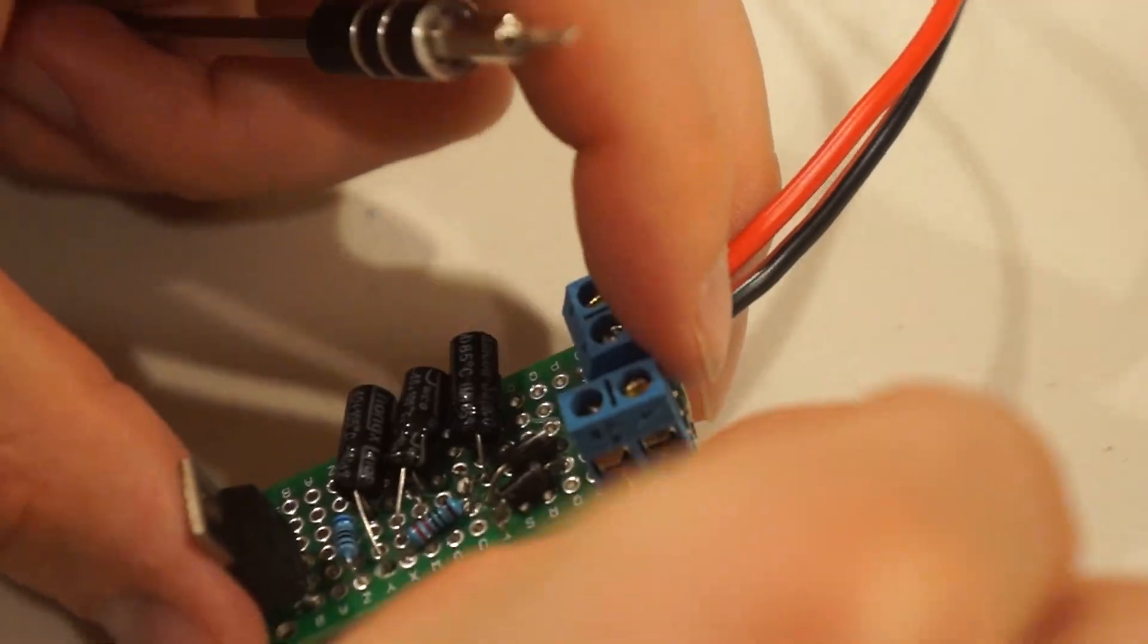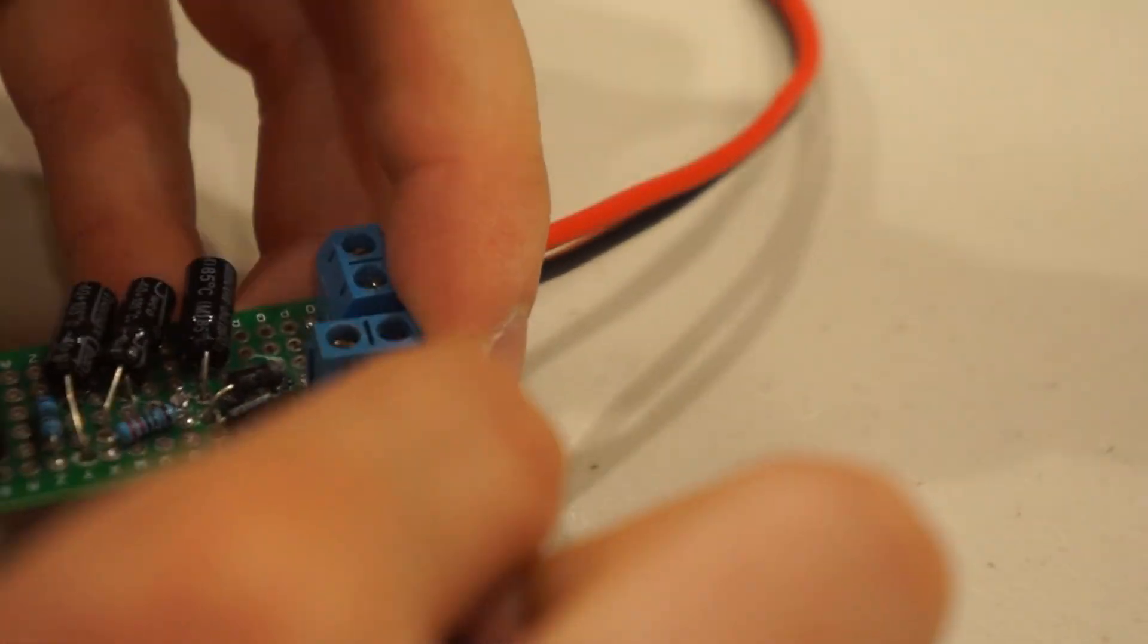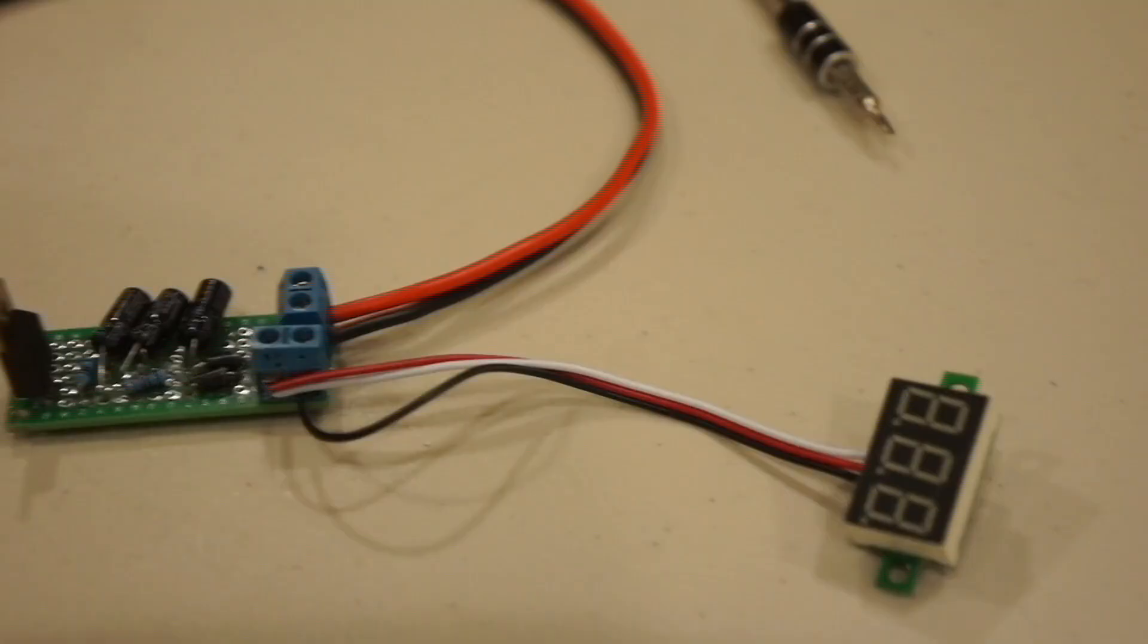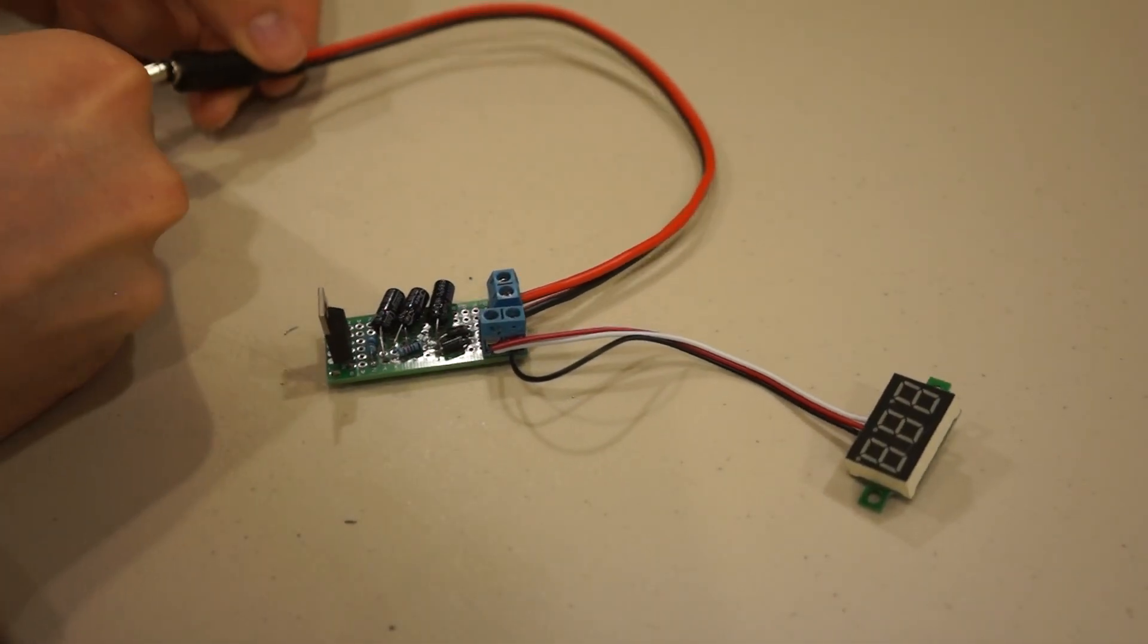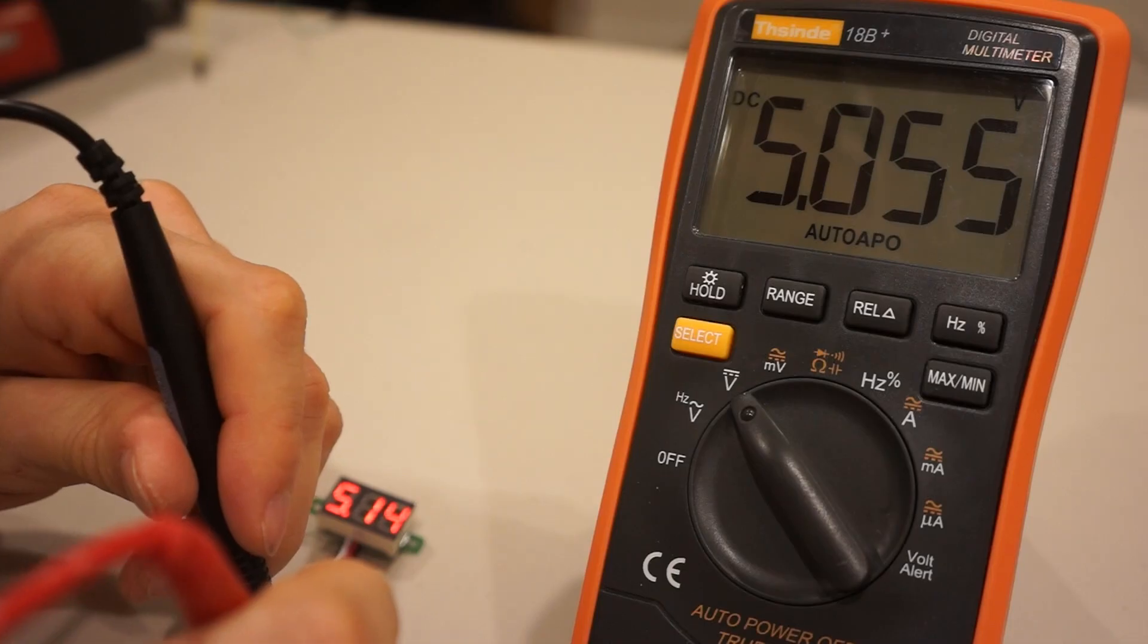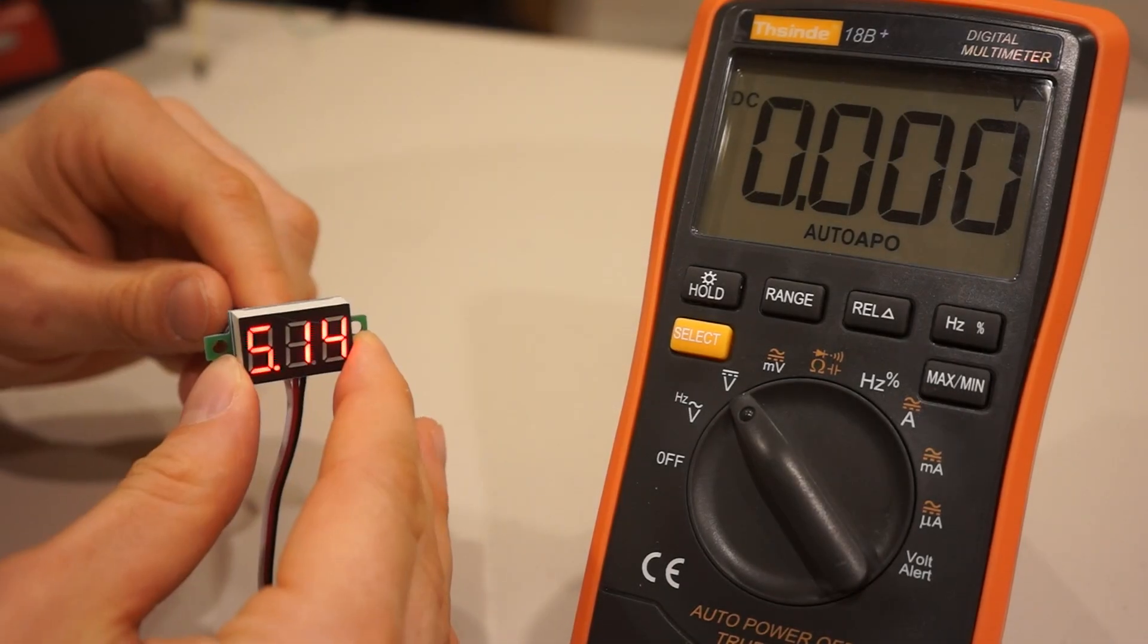We'll just attach the ground wire to our ground, and the positive wire and signal wire to our positive output. It'll then let us know how much voltage is across the terminals. We can tighten the small screw on the back to calibrate it. Let's match it to our multimeter.